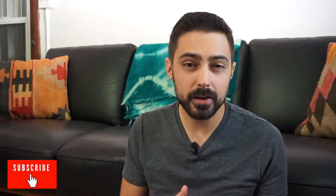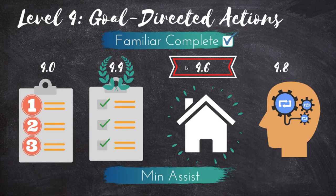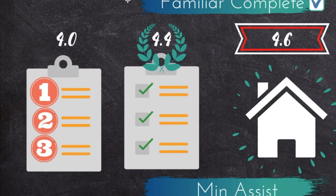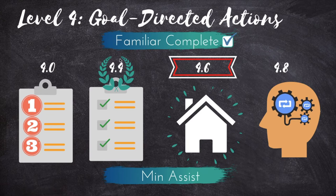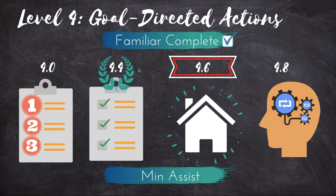The fourth level is the goal directed actions level. The words I associate with this stage are familiar and complete. At 4.0, a person can sequence steps — they'll be able to not only pick up a toothbrush and do a brushing motion, but actually complete a series of steps correctly, such as picking up the toothbrush, applying toothpaste, and bringing it to their mouth. At 4.4 a person may be able to complete an entire activity by themselves with some cueing. That's a huge functional marker — progressing from sequencing steps to completing the whole task. These are familiar tasks, not novel or complicated ones.